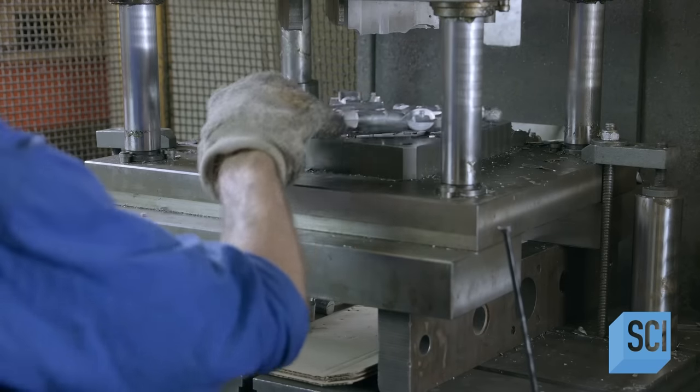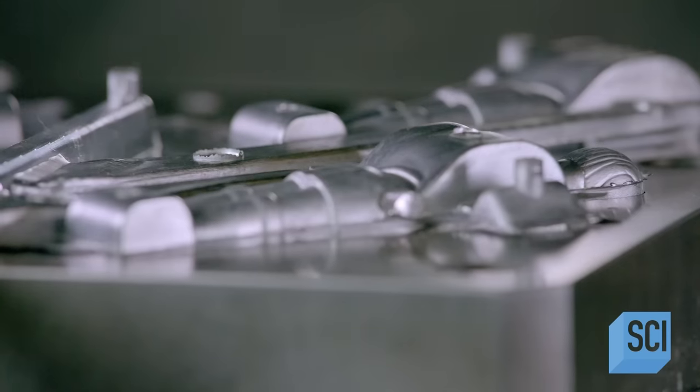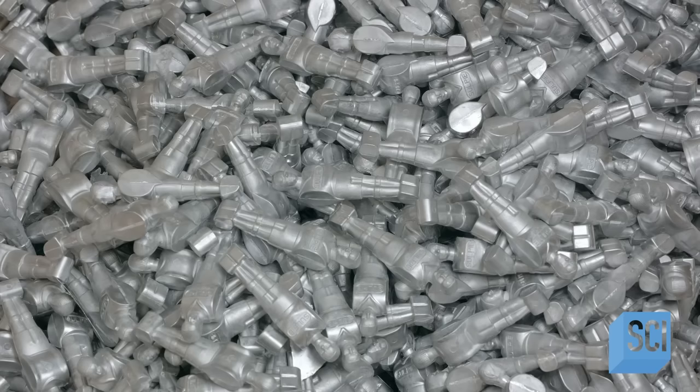A worker places each casting on a press. Then, with one strike, separates the four players and cuts off excess metal.